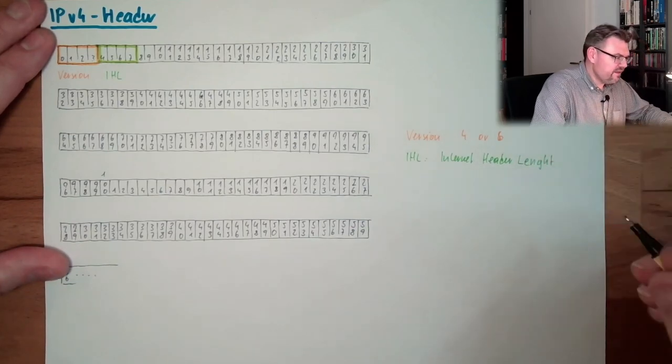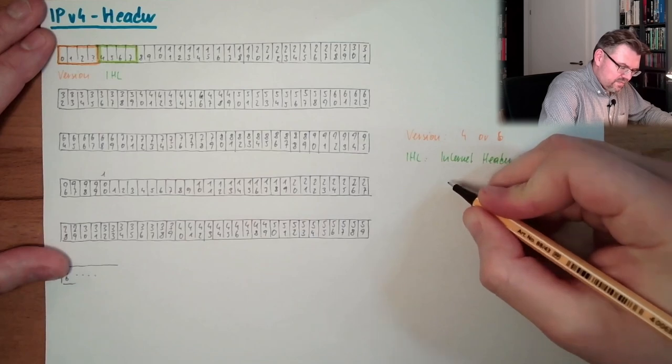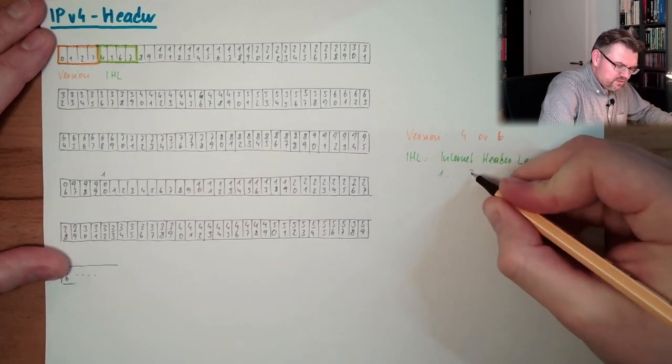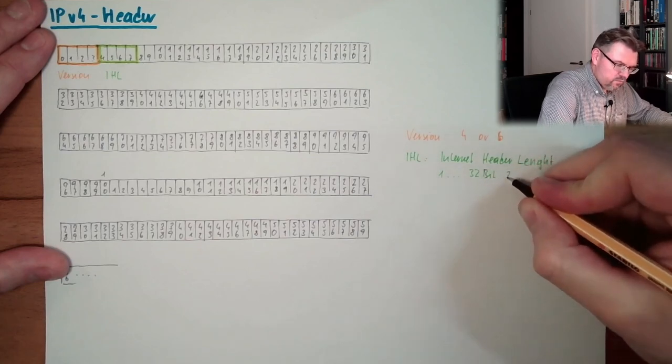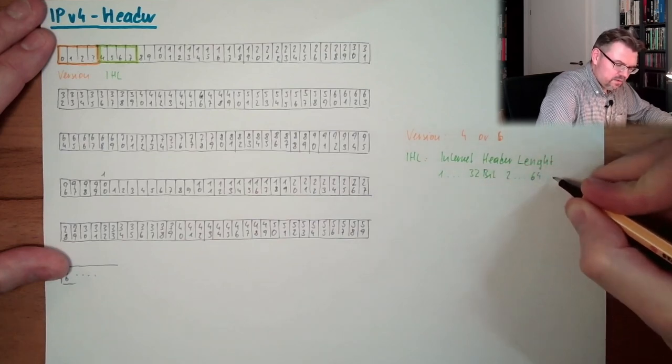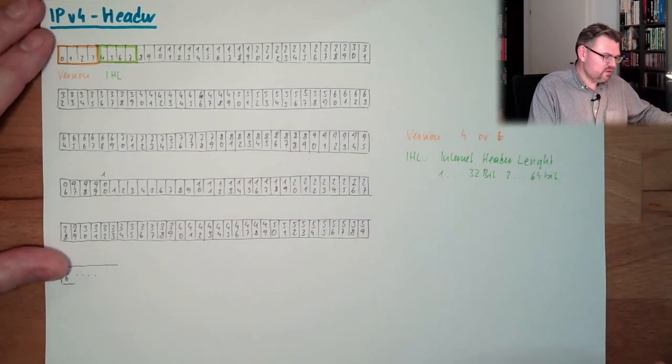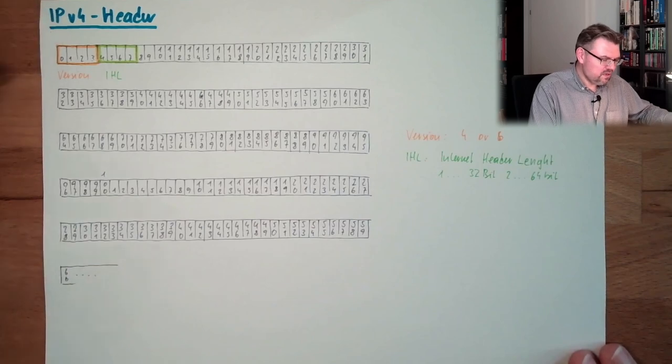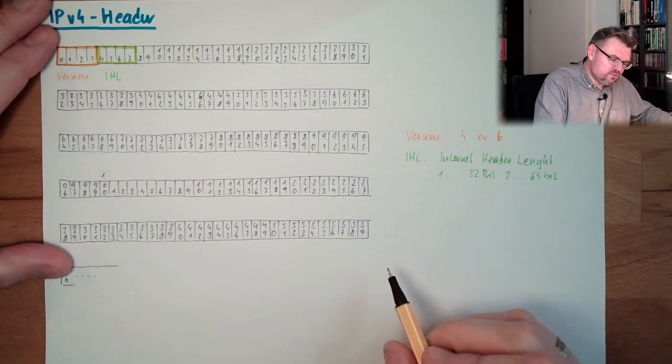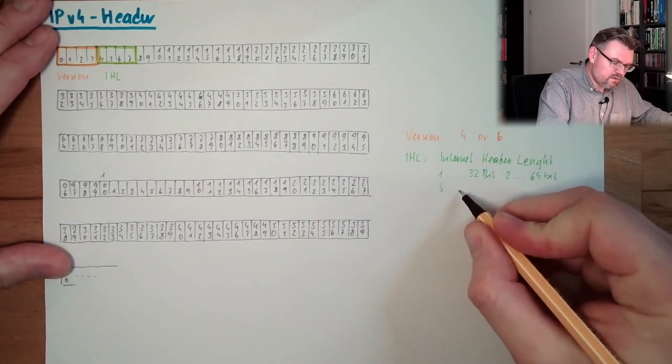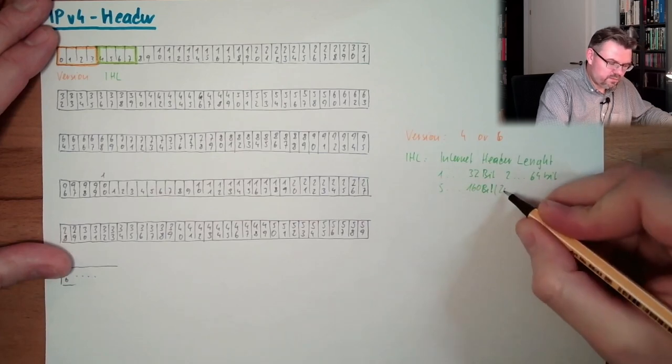1 means the header is 32 bit. 2, 64 bit. And usually we have in here 5. Because this would then mean 1, 2, 3, 4, 5. 5 is this 160 bit, which are those 20 bytes.